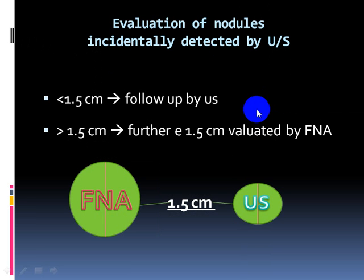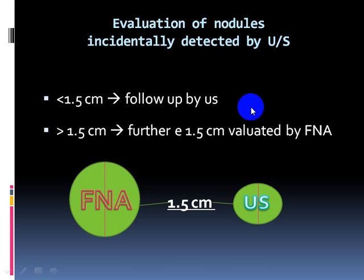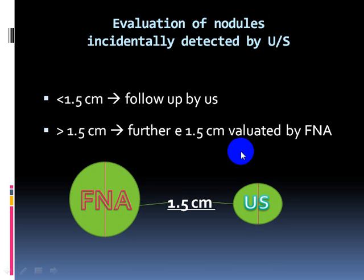Evaluation of nodules detected by ultrasound: when I detect a thyroid nodule by ultrasound, if the nodule is smaller than 1.5 cm, I just do follow-up by ultrasound. If the thyroid nodule is larger than 1.5 cm, further evaluation by fine needle aspiration cytology (FNAC) is required. The key measure is 1.5 cm — larger than this, I perform FNAC; smaller, I follow up by ultrasound.